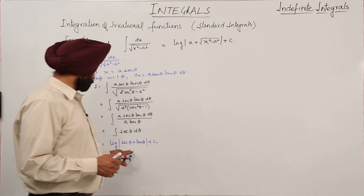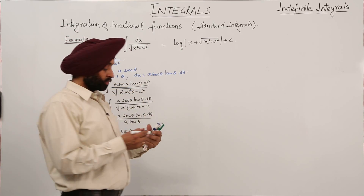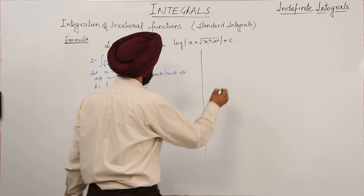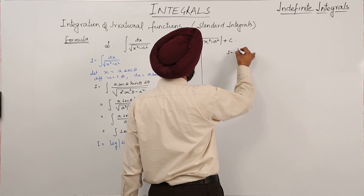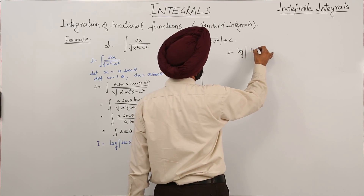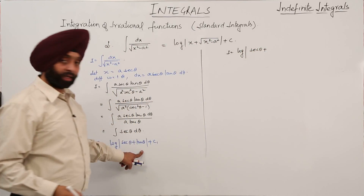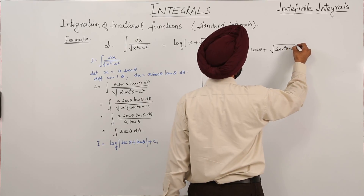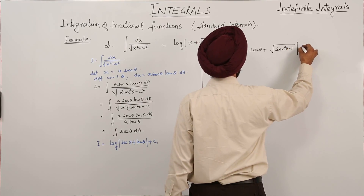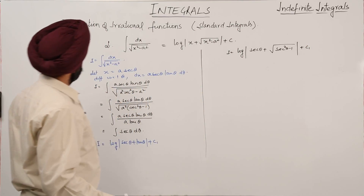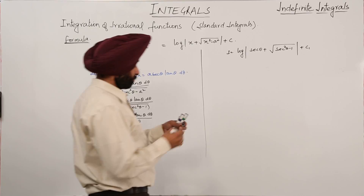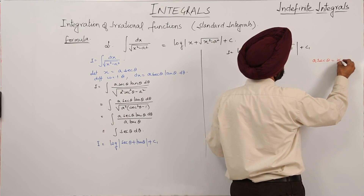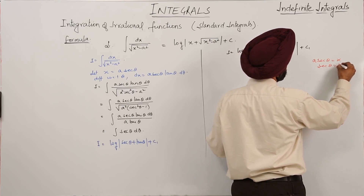Now we have to reduce the answer back to the original variable. So our expression becomes log|sec θ + tan θ|. We can write tan θ as square root of sec squared θ minus 1 plus c1. Since we took x equal to a sec θ, we have sec θ equal to x upon a.